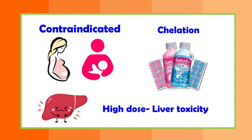Tetracyclines are known to cause chelation — they chelate with certain ions like zinc, calcium, aluminium, and magnesium. For this reason, these drugs should not be administered together with such ions; always ensure an interval of two to three hours. At higher doses, tetracyclines can also cause steatosis and liver toxicity, so monitoring is essential, especially with long-term use.